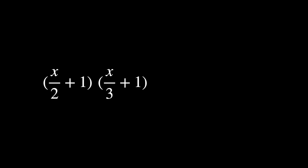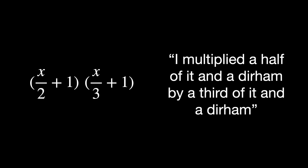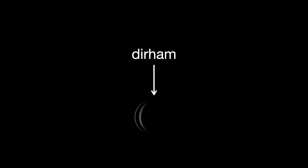Al-Khwarizmi wrote: I multiplied a half of it and a dirham by a third of it and a dirham. A dirham was a coin, a concept which Al-Khwarizmi used to mean one.